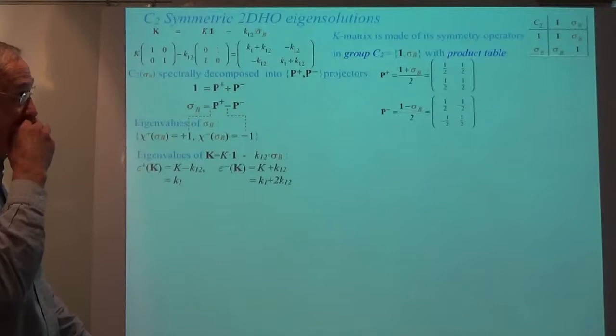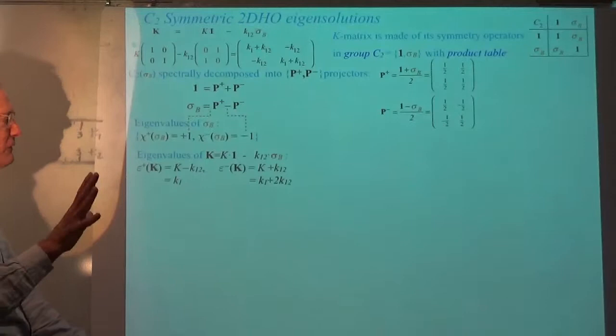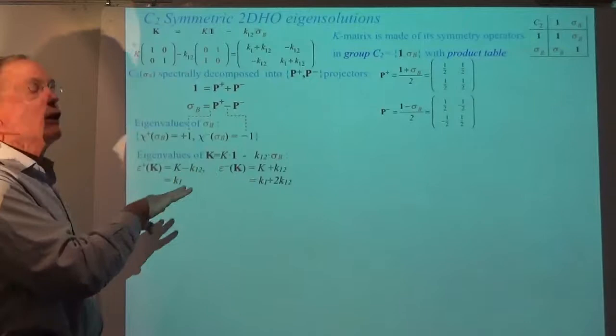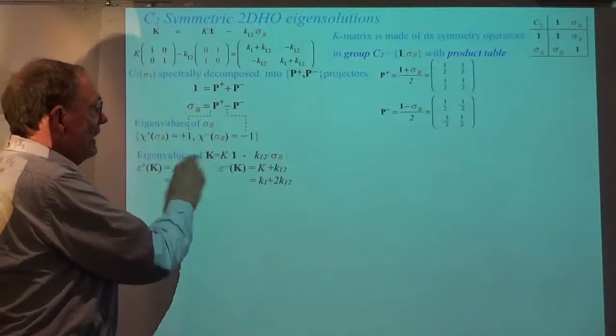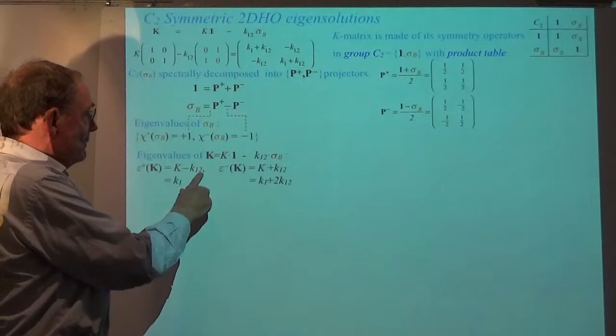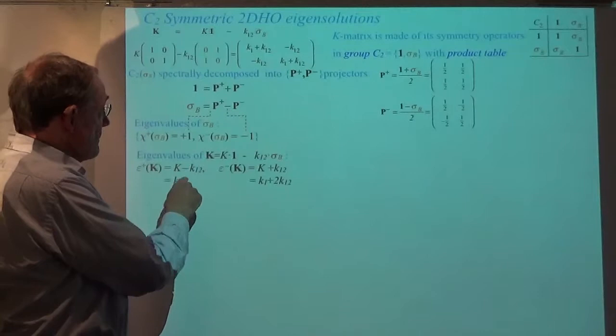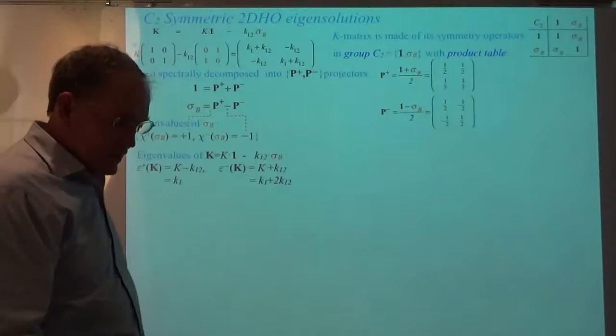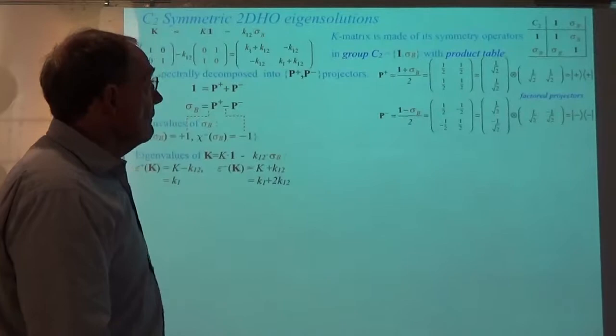This is 20/20 hindsight — we're doing this very elegantly. If you go back to the books on group theory where this started, with Wigner and Weyl, you won't find any of this because it was new. In 20/20 hindsight I can see the elegant ways to do this. So the eigenvalues of K are going to be those linear combinations: k1 minus k12, which happens to be k1, and then the other eigenvalue is k1 plus k12. Now we have to look at what this involves physically.